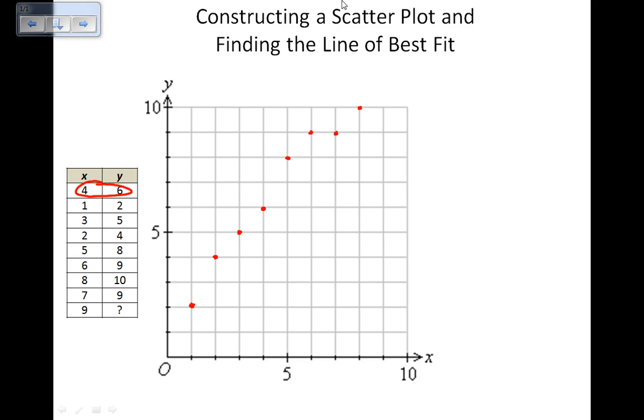So already you can see the line of best fit developing. Now to find the line of best fit, you have to approximate what line goes roughly through the middle of those points. Now if we had an outlier out here, let's say we had a point right there that didn't follow the data, we'd have to ignore that. But in this case, the data is quite good, and it has a strong correlation.